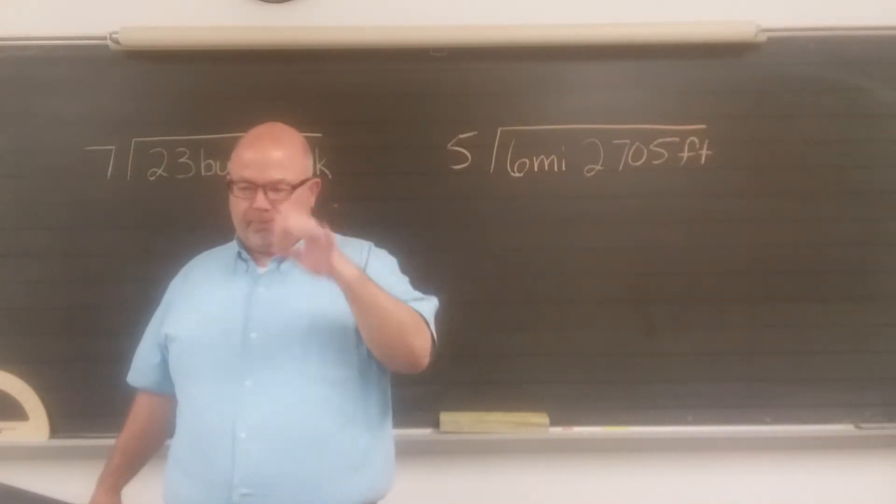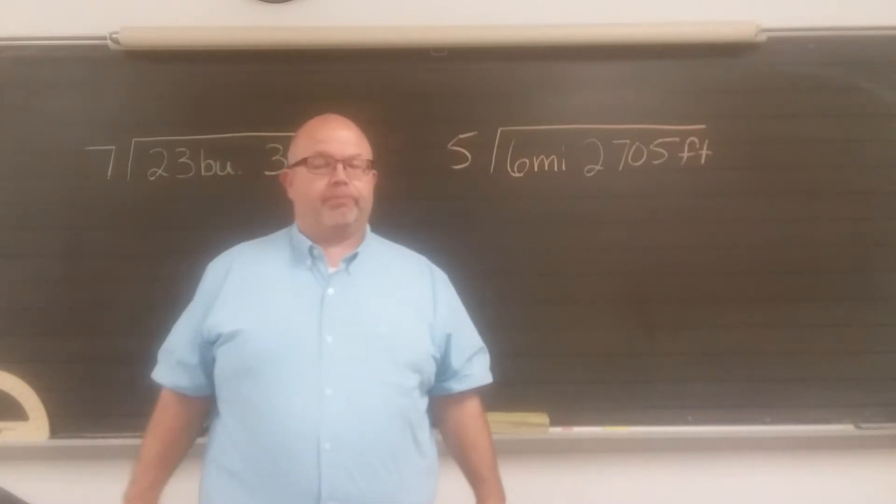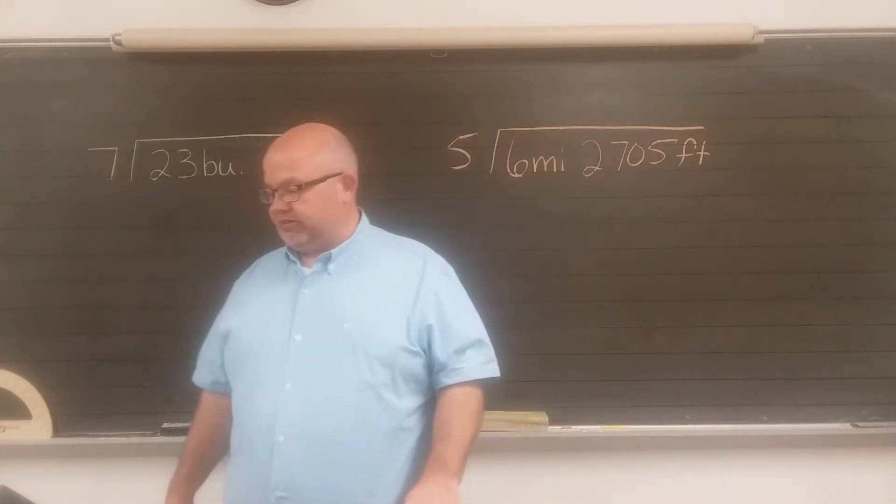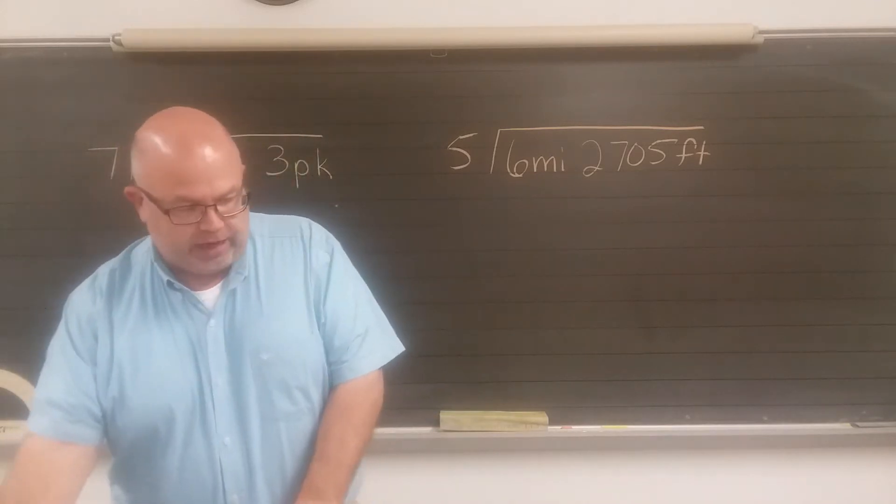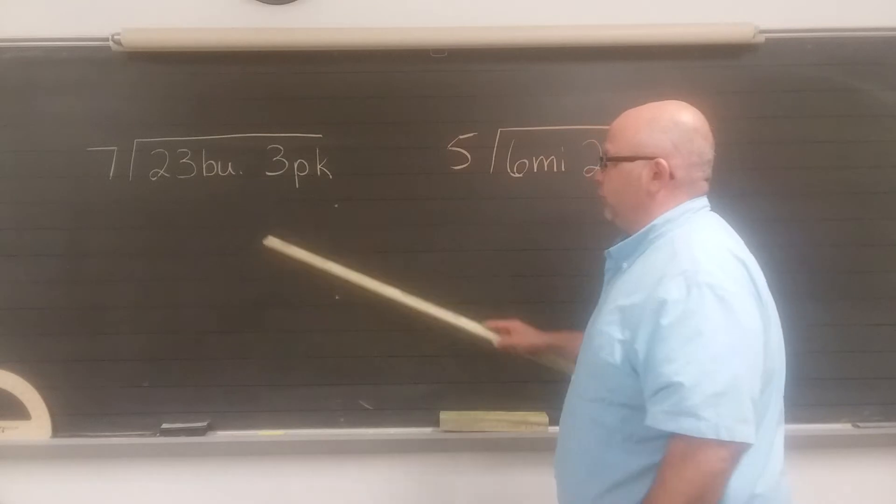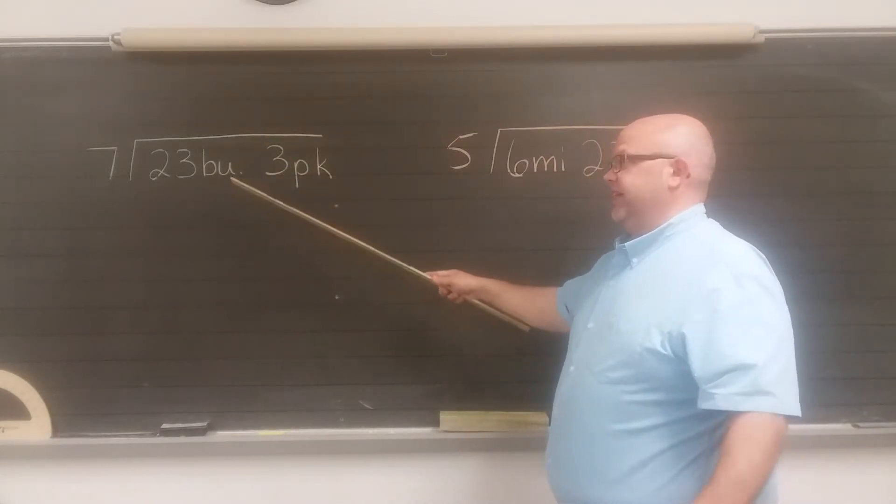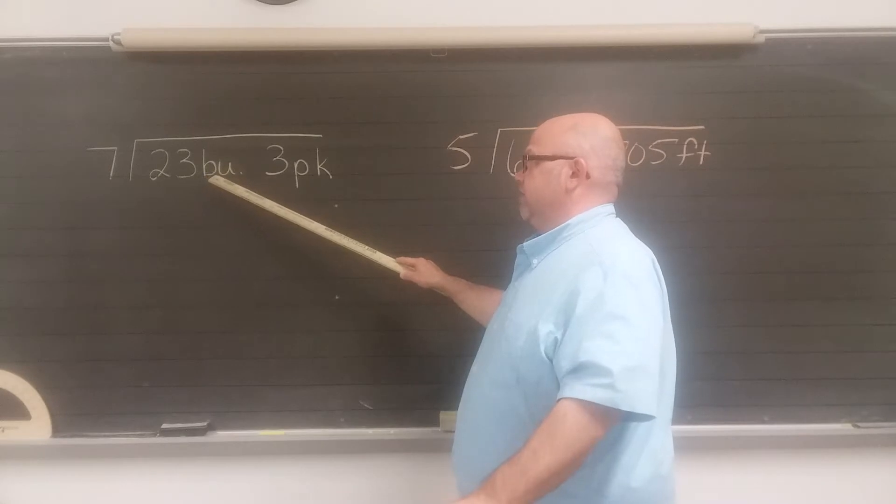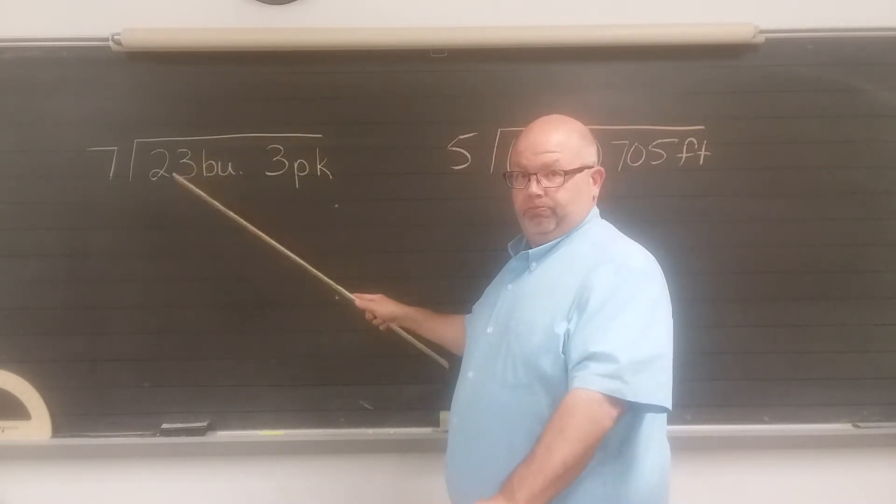161 is Division of Compound Measures. Today we're going to review, we're going to look at Division of Compound Measures, and then we're going to review adding, subtracting, and multiplying compound measures. This lesson is basically going to be a review of and division of compound measures. Compound measures means that you are working with two different labels, two labels that are related. You're not going to have 23 bushels, five miles, or anything ridiculous like this. This is always going to be something that is related to each other, bushels and pecks.